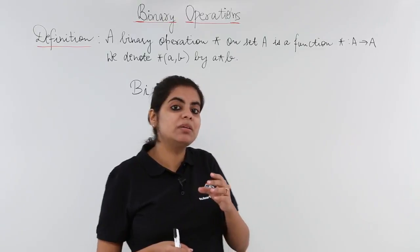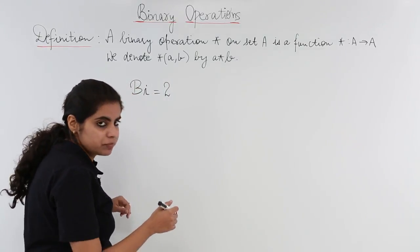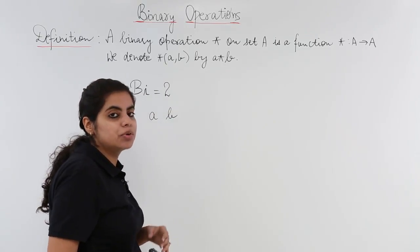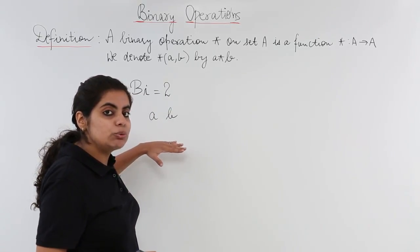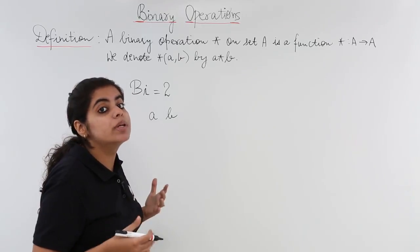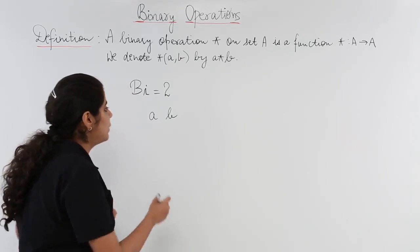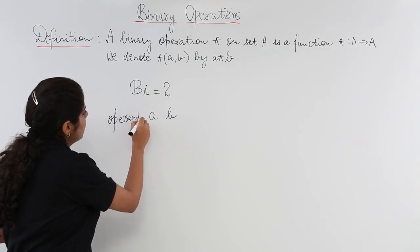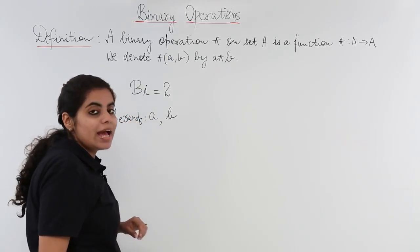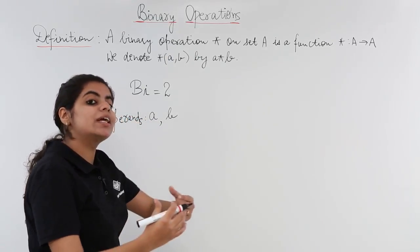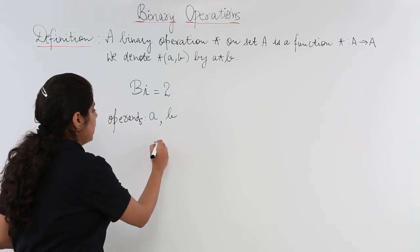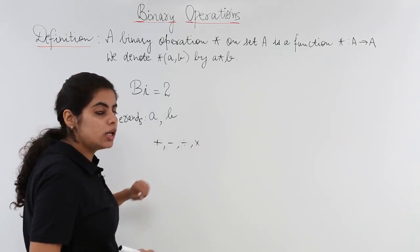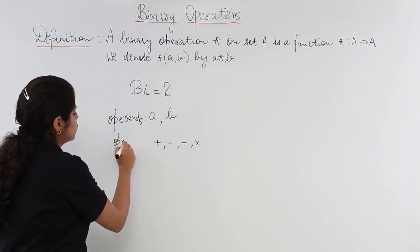Now what do we mean by operation? Suppose I have A and B as two numbers. These are known as operands because we need to apply an operation on these. What is an operation? It can be anything like plus, minus, divide, or multiply. These are all called operations.